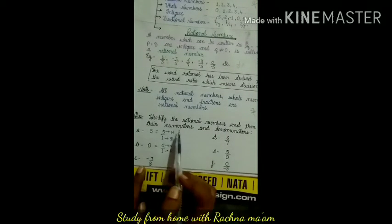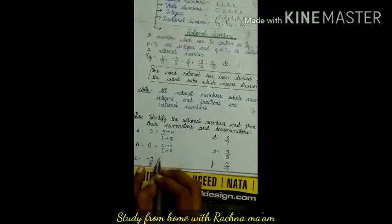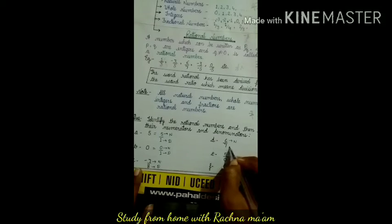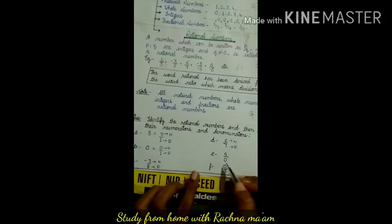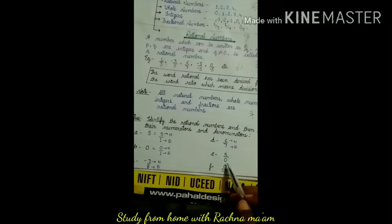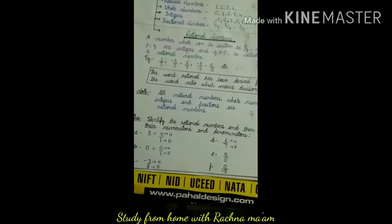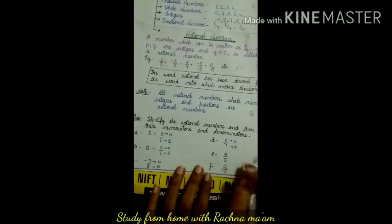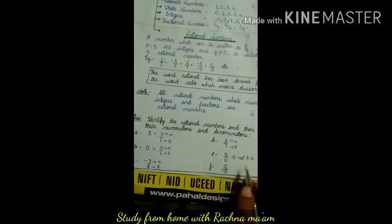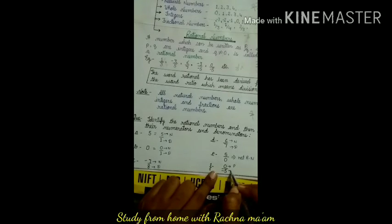Minus seven upon eight — it is also in the form p upon q. So here minus seven is the numerator and eight is the denominator. Six upon seven — it is also a rational number; six is the numerator and seven is the denominator. Five upon zero — tell me, is it a rational number or not? No, it is not a rational number, because the denominator is zero. The denominator cannot be zero, otherwise the answer will be meaningless. So it is not a rational number. Zero upon minus five — yes, this can be a rational number, because the denominator is not zero, and it is already written in p upon q form. So zero is the numerator and minus five is the denominator.